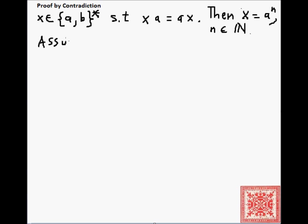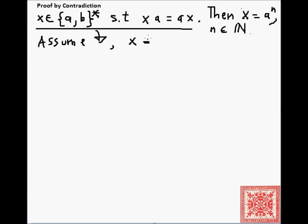So, let's use a proof by contradiction. We will assume that x is a string over the alphabet {a, b} such that x·a is equal to a·x. And we will also assume toward a contradiction that x is not equal to a to the n, where n is a natural number, and a to the n is n concatenations of a with itself.